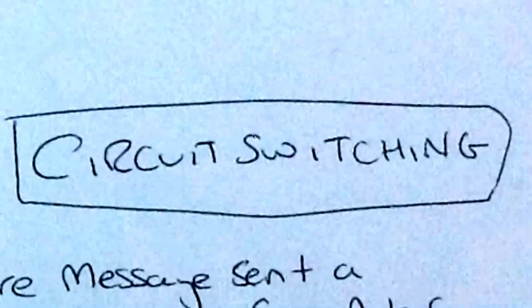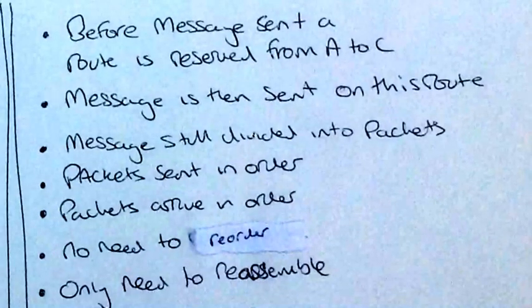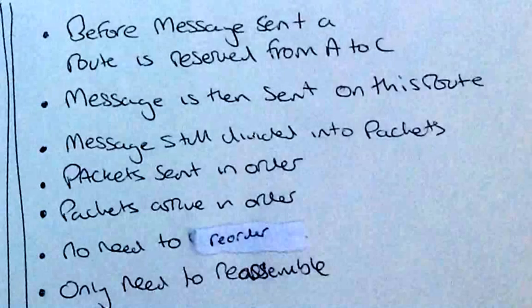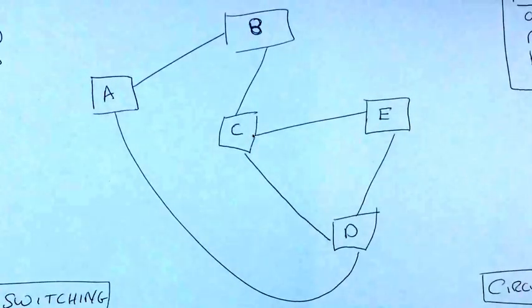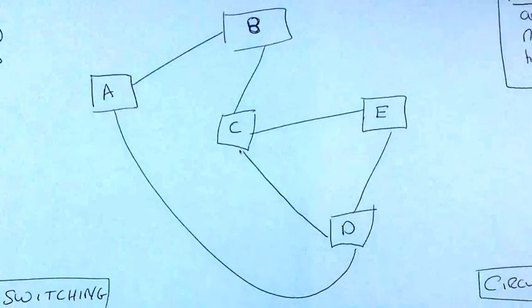Right, the other type that we've got is circuit switching. This time, before the message is sent, a route is reserved from A to C. So if we just have a quick look, a route is reserved from A to C. So this route could be this one here, a direct route here, quite simple. Well, it is available. It's reserved. That means nothing else can use it while this data is being sent.